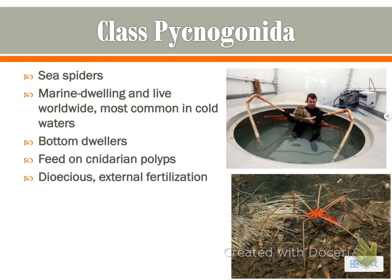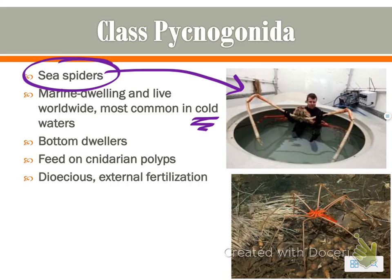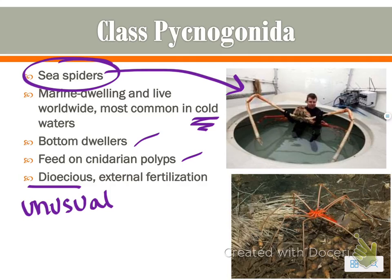Class Pycnogonida consists of sea spiders. As you can see in the image, these can get pretty large and creepy. They are marine-dwelling, mostly in cold water, so you won't find them on a Florida beach. They are huge bottom-dwellers that feed on cnidarian polyps — the offspring of jellyfish. They are dioecious with external fertilization. They don't fit neatly into any particular place, so they were placed in this subphylum because it's the closest relationship, though their arthropod placement is debatable.